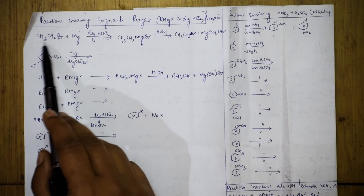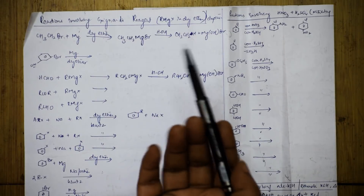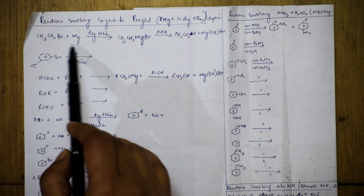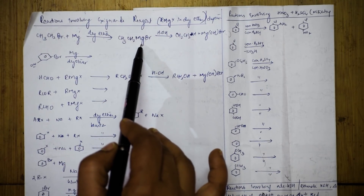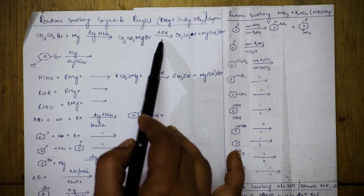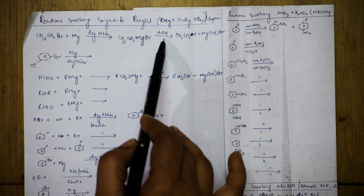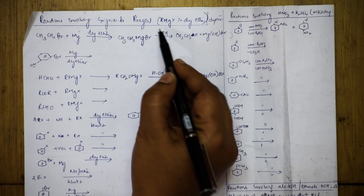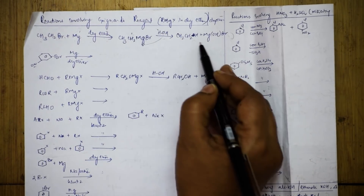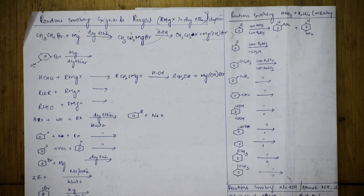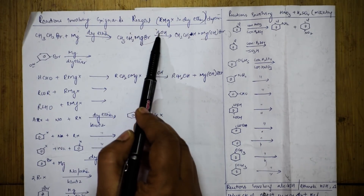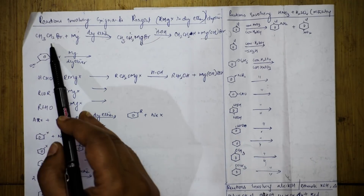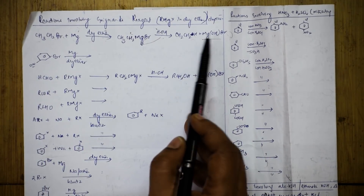Now, I have this alkyl halide. In the exam paper, first you add - the whole magnesium goes and adds. Once it is added, you need to hydrolyze the reaction. When you hydrolyze, this particular hydrogen goes here and MgOHBr comes out. So from alkyl halide, you are getting alkane as well as MgOHBr.